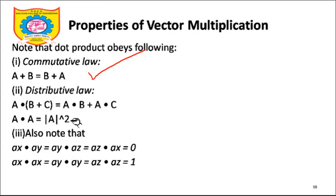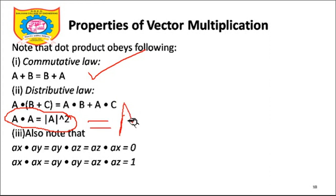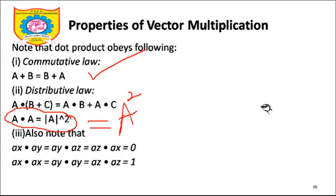A dot (B + C) is equal to A dot B plus A dot C. And this is important: A dot A is A squared. Whenever I write A̅ dot A̅, I can represent this directly as A squared. Dot product between a vector and itself: A̅ dot A̅ = A·A·cos(θ_AA). The angle between two identical vectors is zero, and cos(0) = 1, so A̅ dot A̅ results in A squared.